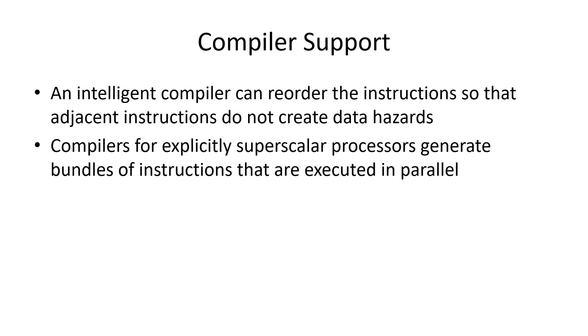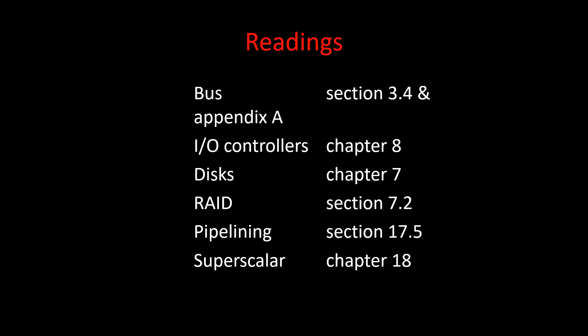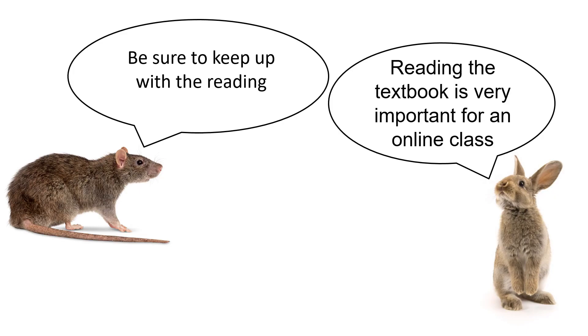Most compilers have an option to optimize code to rearrange it and avoid pipeline hazards and superscalar execution hazards. Generally you have to turn on the options — by default they are turned off. In the C compiler, it's the -O option for optimize. Be sure to keep up with the reading, as reading the textbook is very important for an online class.